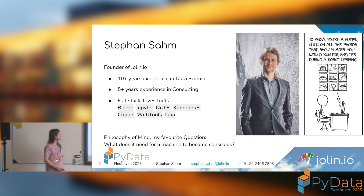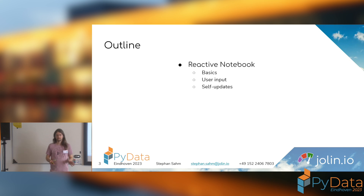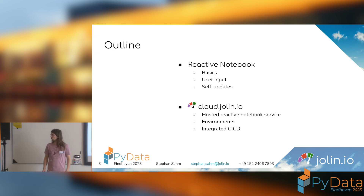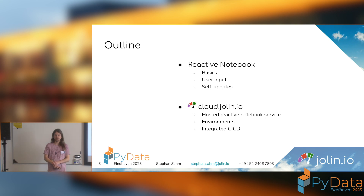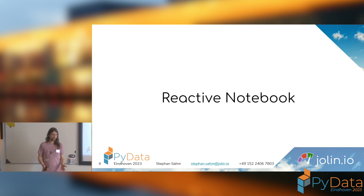The focus as of now is actually the reactive notebook, and because of this I want to give an overview about it first — which is a bit overlapping with the talk I gave this morning. The second part is about the cloud deployment so you can use this already. This is also intended to be used by companies. cloud.jolin.io is the website where you can just go and check it out — you log in with GitHub and everything is there.